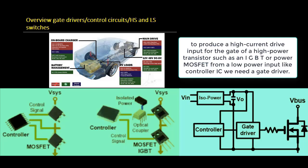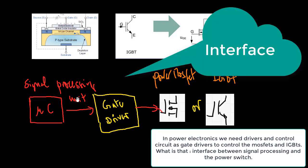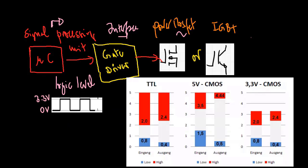Gate drivers control the MOSFETs and IGBTs. What is that? This is an interface between signal processing like microcontrollers and the power switch. The logic level MOSFET has a low gate threshold voltage, allowing it to be driven at 5 volts or 3.3 volts directly from microcontrollers.